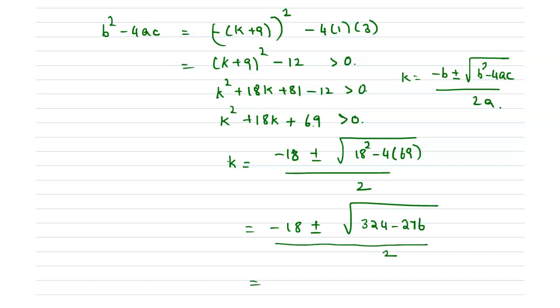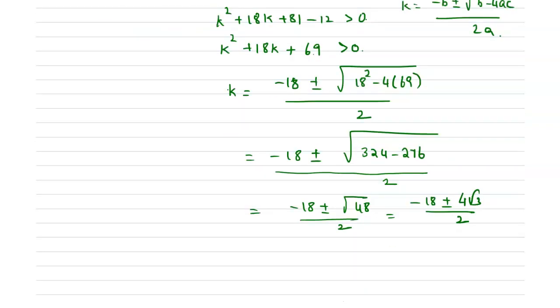Now this is equal to minus 18 plus or minus square root of 48 divided by 2, which is equal to minus 18 plus or minus 4 root 3 divided by 2, which is minus 9 plus or minus 2 root 3 greater than 0.